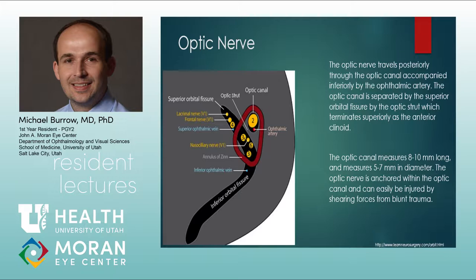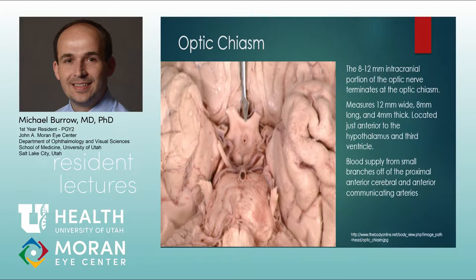The optic nerve travels posteriorly through the optic canal, within which the ophthalmic artery also traverses. It is separated from the superior orbital fissure by the optic strut, which terminates superiorly at the anterior clinoid — a landmark frequently referenced when reviewing MRI and CT images. The optic canal is 8 to 10 millimeters long and 5 to 7 millimeters in diameter. The nerve is anchored tightly within the canal, which is why traumatic injuries can cause shearing forces and damage right within the canal.